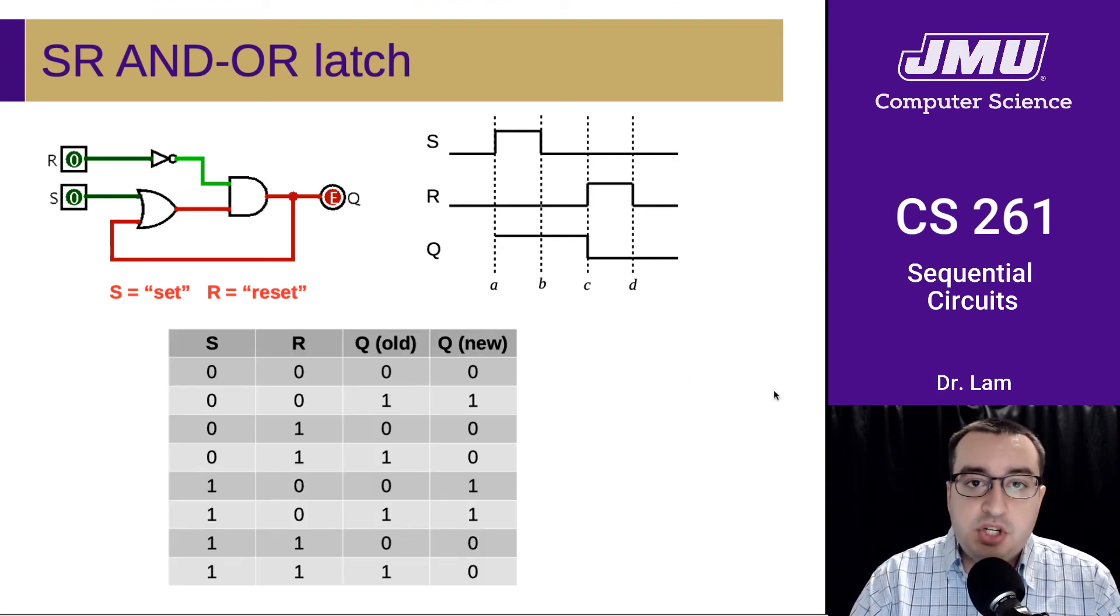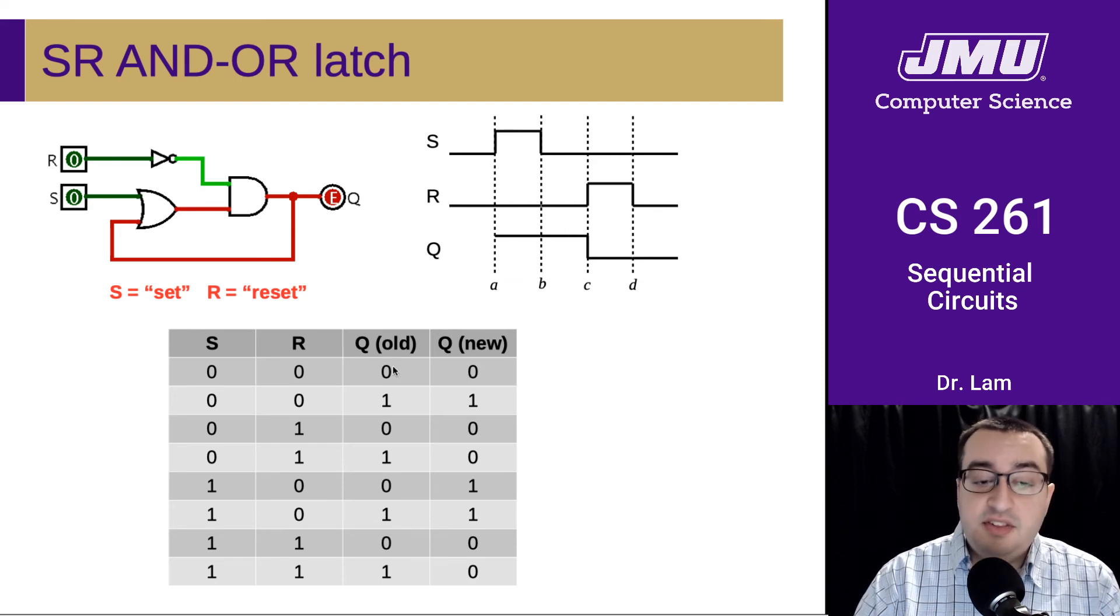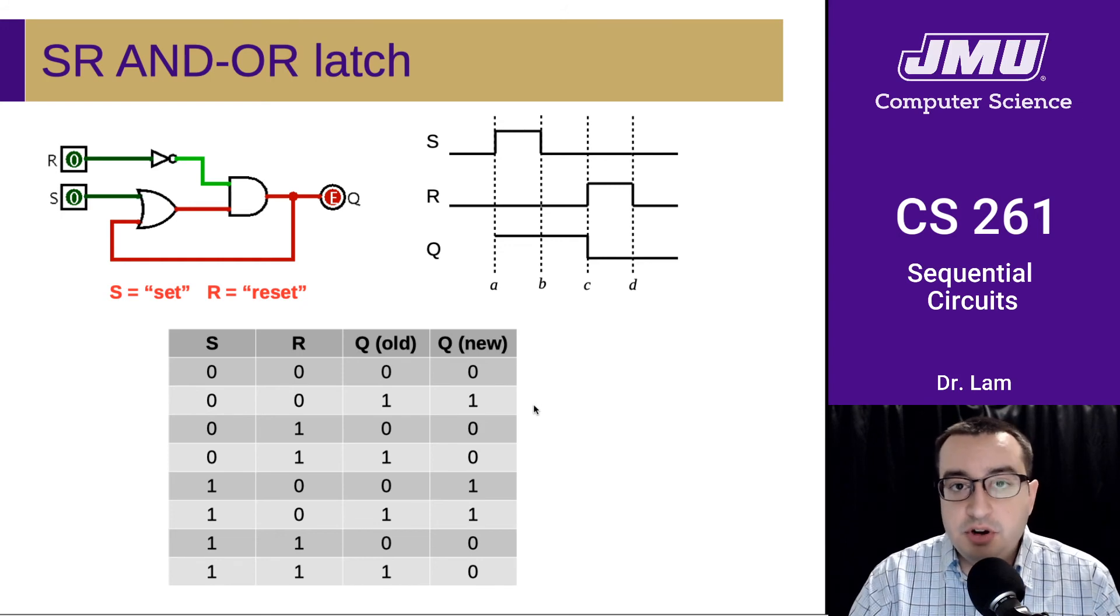We could also represent this information using a truth table. So this is our new truth table. And you'll notice that the truth table requires a column for the old value of Q, which is sort of an input to the circuit, right, because we've got the loopback edge here. And I'm not going to look at every single entry in this table, but you should look through it and convince yourself that this is what's going on. Generally speaking, the new value of Q is the same as the old value of Q. And that means that Q is, in some sense, remembering its old value.